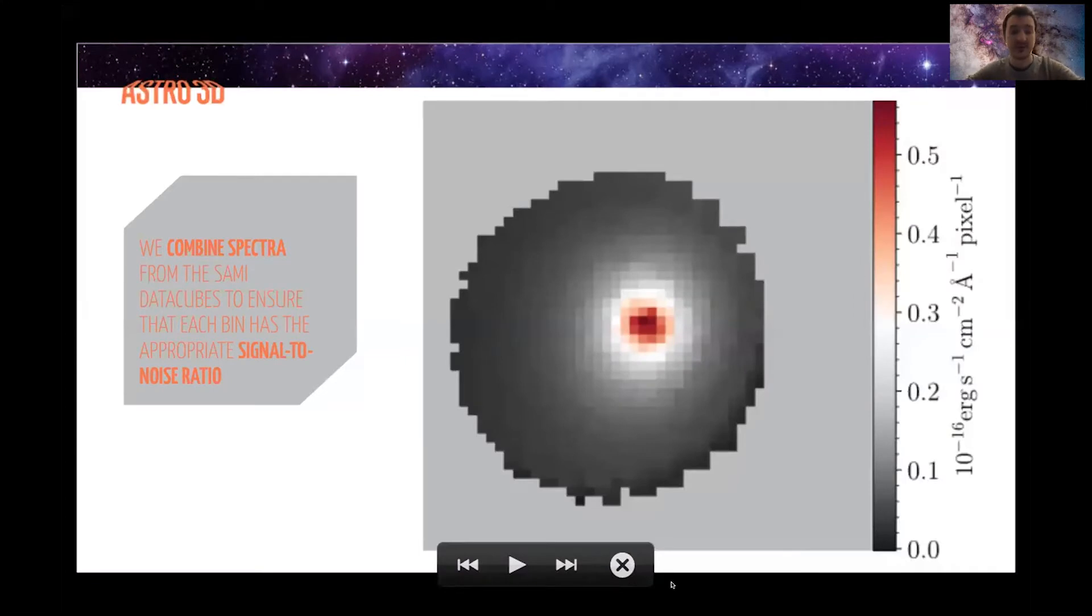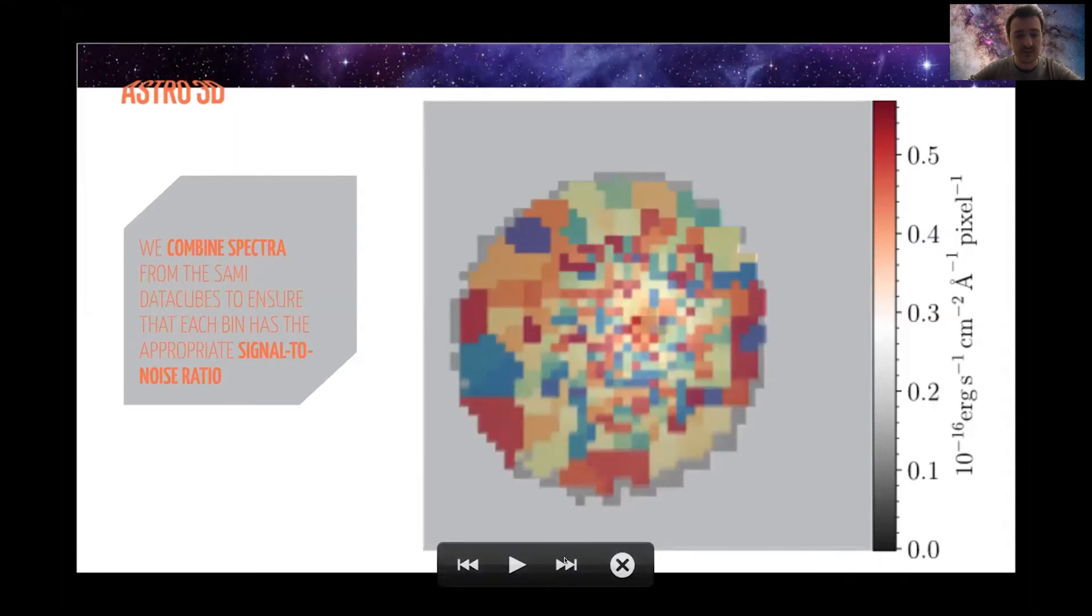I'm going to give you a quick summary of how I measure my gradients. This is an example SAMI data cube. I've collapsed everything along the wavelength direction. So you can see the center of this galaxy is bright red here in the middle. So ideally what we'd love to do is to measure a stellar population in every single one of these pixels. It turns out that if you do that towards the edge of your galaxy, you're really lacking signal to noise. So what you have to do is combine lots of these things together.